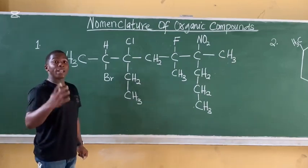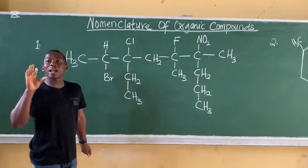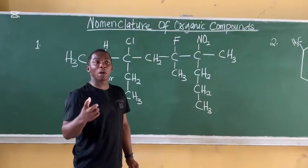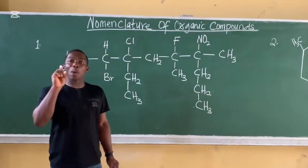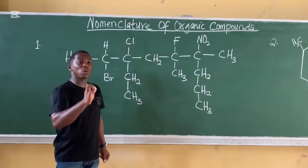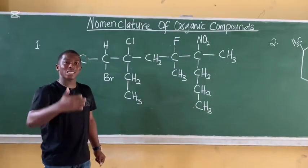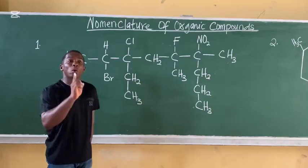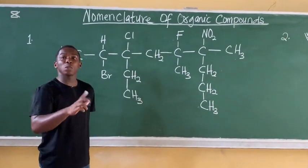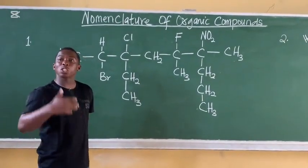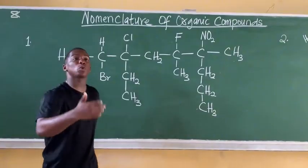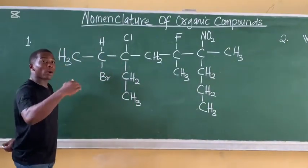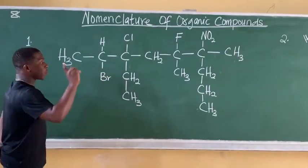If you want to name an organic compound, there are three things to take note of. Number one: you must count the longest carbon-to-carbon continuous chain. So before you name an organic compound, your aim is to count the longest carbon-to-carbon continuous chain. First of all, I want to know my longest carbon-to-carbon continuous chain, so I'm going to count.